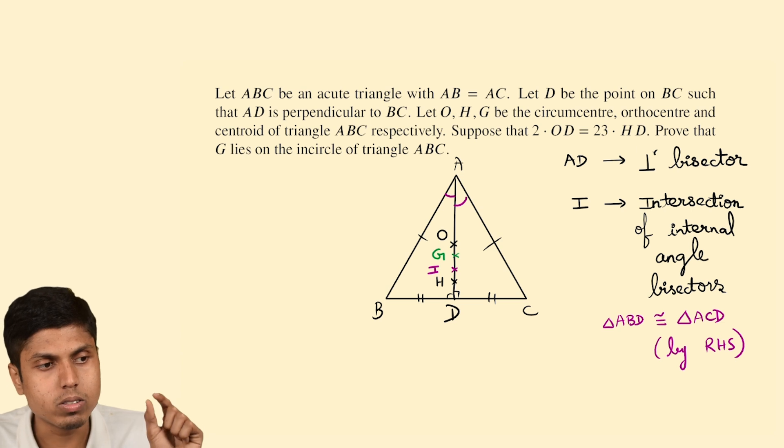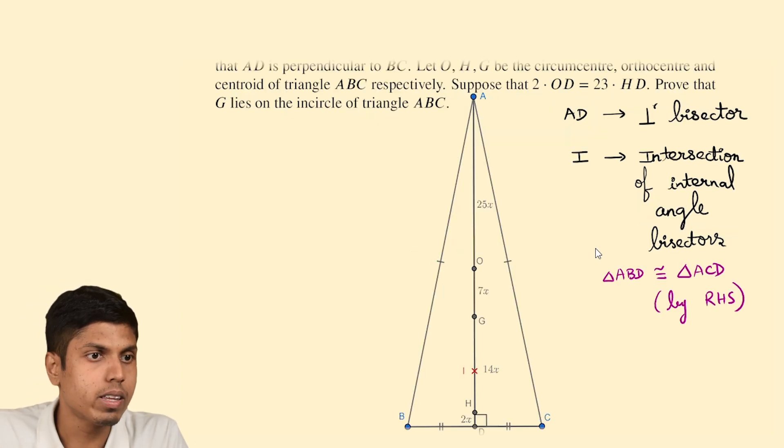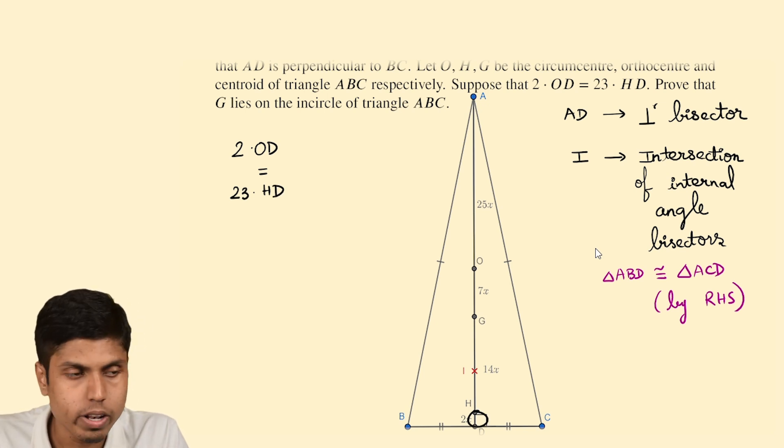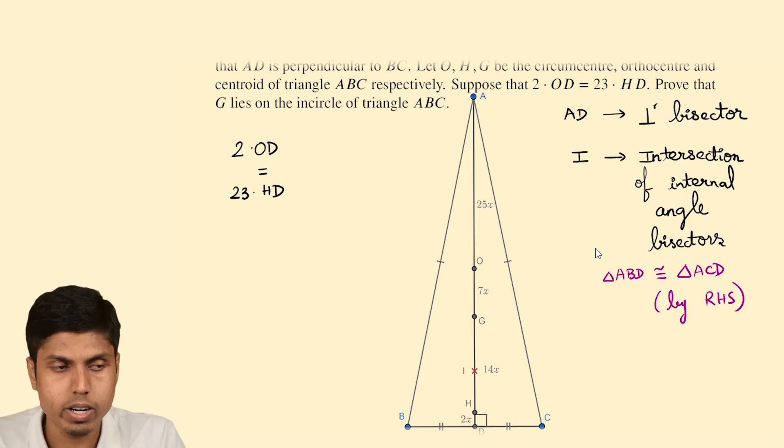So as you could see all these points O, G, I and H are collinear. And they lie on the segment AD. So after figuring this out in a neat way we get the following diagram. Now as per the given condition, twice of OD equals 23 times of HD. So as you could see HD is quite small and OD is quite large. So it conforms to our diagram.